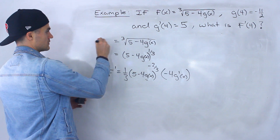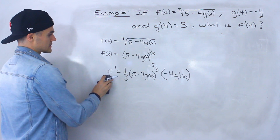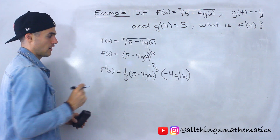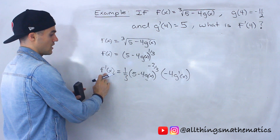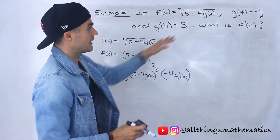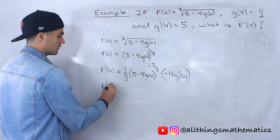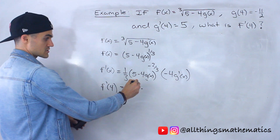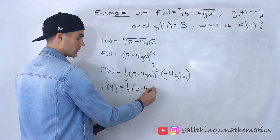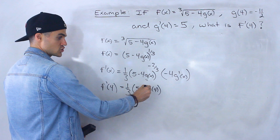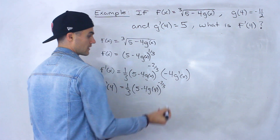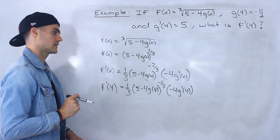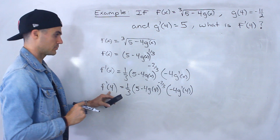So this was f of x, and I just rewrote it in a different format. This here is f prime of x — the derivative of f of x. Now we can plug in everything. They're asking for f prime of 4, so we plug in 4 for all the x's. We'll have 5 minus 4 times g of 4, still to the power of negative 2 over 3, times negative 4 times g prime of 4.